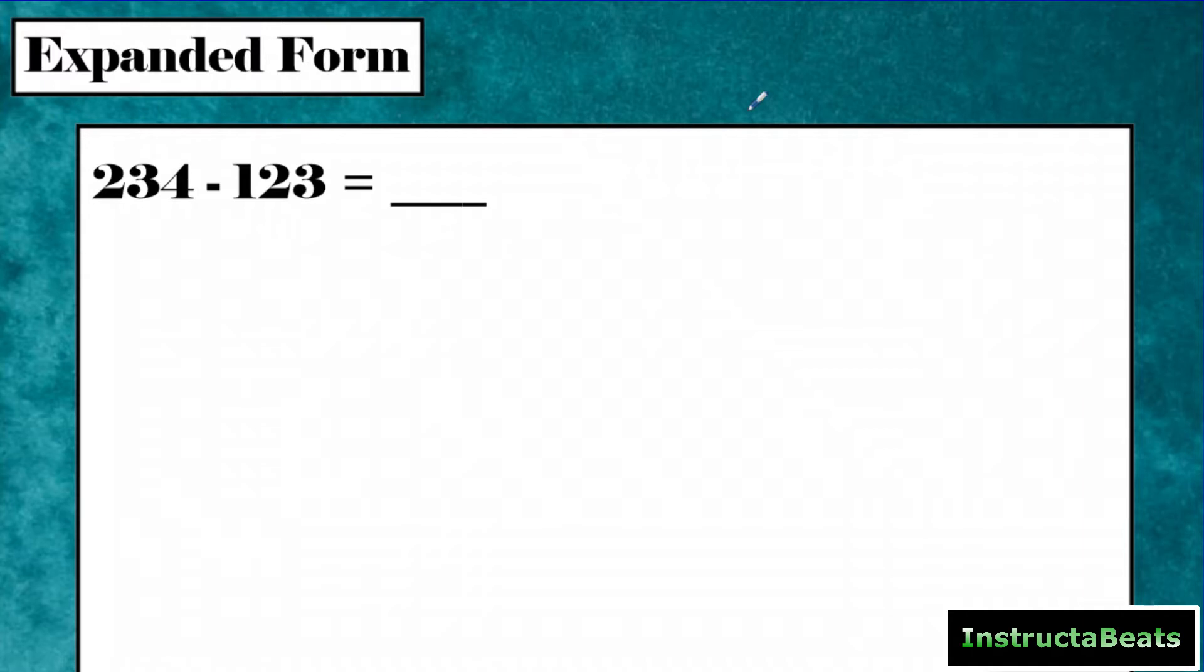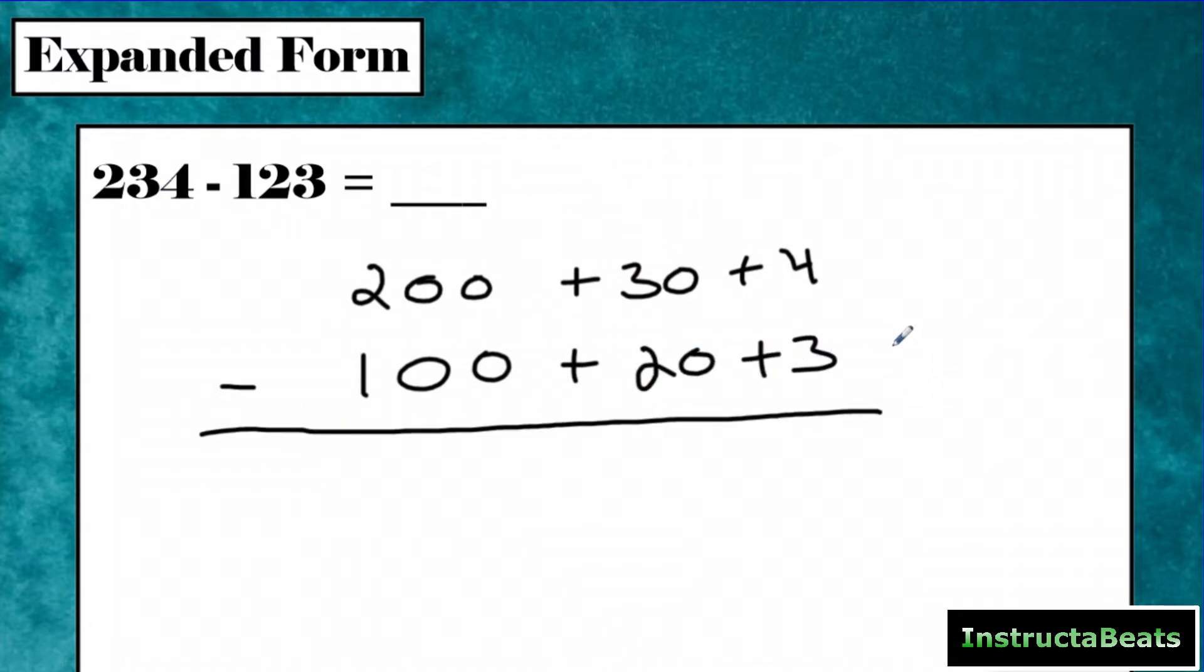When we get into the standard algorithm, it's kind of a shortcut. And we want to make sure that you actually understand what's happening rather than just memorizing the steps. So when we did expanded form, we need to chop up our numbers. We're going to start with 200 plus 30 plus 4, and we were subtracting from that 100 plus 20 plus 3. Just showing the value of each number's digit. And then all we did was subtract. So 4 minus 3 was 1, 30 minus 20 was 10, and 200 minus 100 was 100. And then we put those back together.